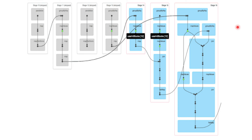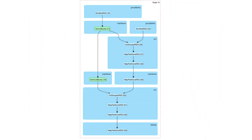You can drill down into a particular stage to see detailed operations. For example, within one stage there is a shuffle operation from a group by, which feeds into a map values step. A parallel step also feeds into a join operation, which internally does co-group, map partition, and another map partition. DAG visualization is very helpful when you want to see each set of operations happening within the DAG.